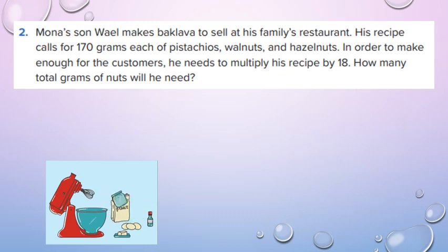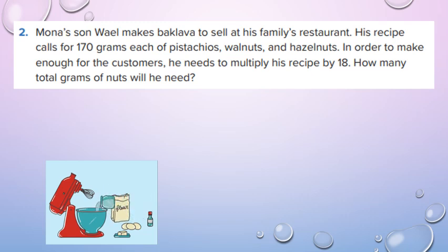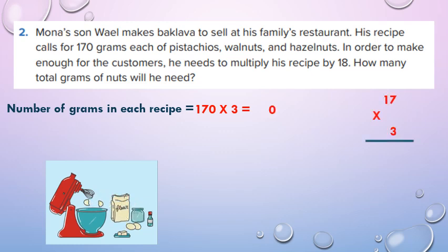Exercise 2. Wa'il's sons made baklava to sell at his family restaurant. His recipe called for 170 grams each of three types of nuts. In order to make enough for the customers, he needs to multiply his recipe by 18. How many total grams of nuts will he need? First, number of grams in each recipe: 170 by 3, because he has 3 types of nuts. 3 by 7 equals 21, 3 by 1 equals 3 plus 1 equals 4. So the nuts in one recipe: 510 grams.